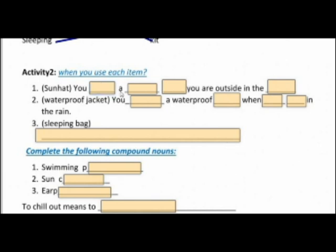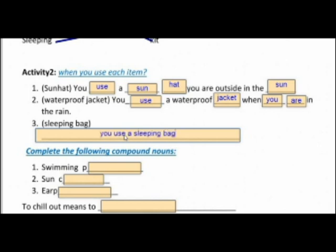The students open the worksheet, do the exercise, and click finish. Then they can check their answers — right answers will be green, wrong answers will be marked with red, and they will see the total score at the top of the page.